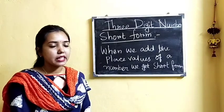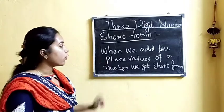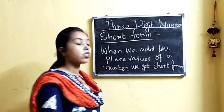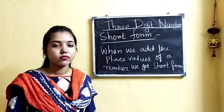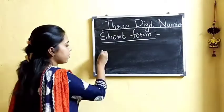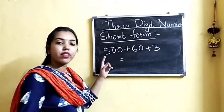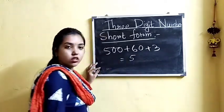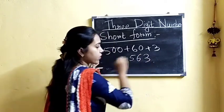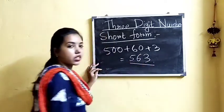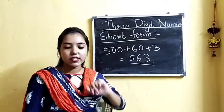Now we will learn to write the short form of a number. When we add the place values of a number, we get the short form. Let us take an example: 500 + 60 + 3. So we have 5 hundreds, we write 5; 6 tens, we write 6; and 3 ones, we write 3. So we get 563. This is the way to write the short form of any number.